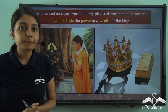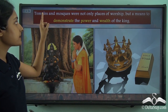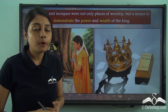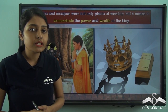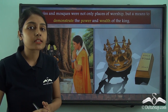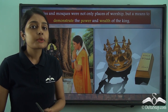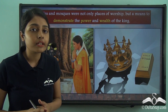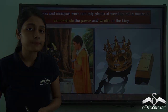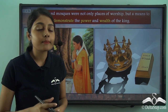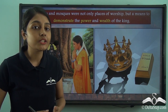Among the various religious places in the Indian subcontinent, for our discussion we will be focusing on temples and mosques — the places of worship of the Hindus and the Muslims respectively. Conventionally, we have the idea that temples and mosques are places of worship alone, where people gather to offer prayers to God. But you will be surprised to know that during the medieval period, this was not the only purpose why temples and mosques were constructed by the kings and rulers.